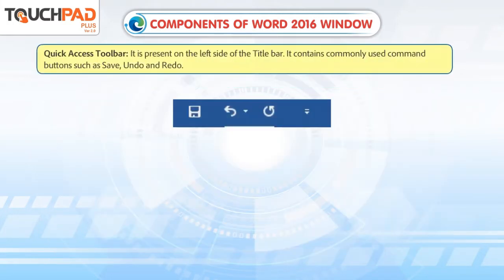Quick Access Toolbar: It is present on the left side of the title bar. It contains commonly used command buttons such as Save, Undo, and Redo.